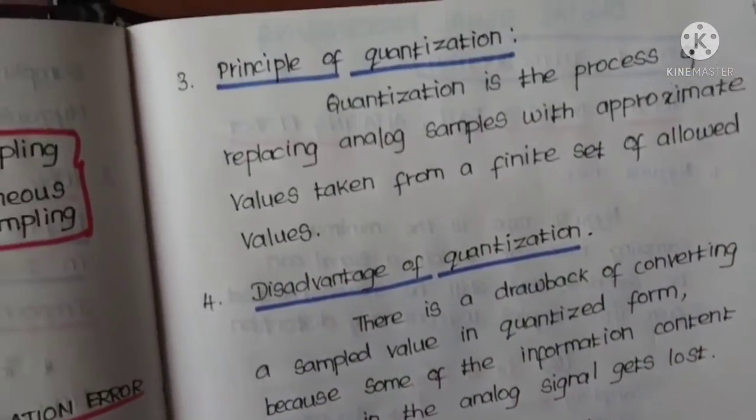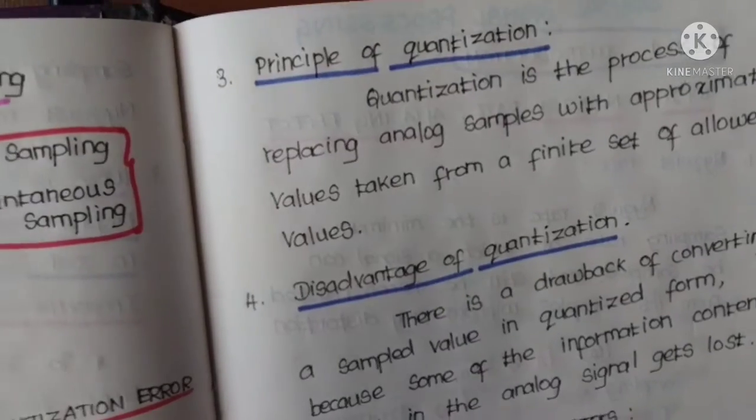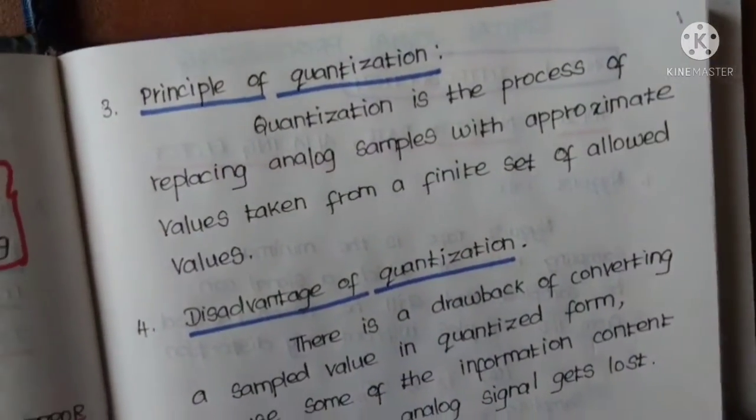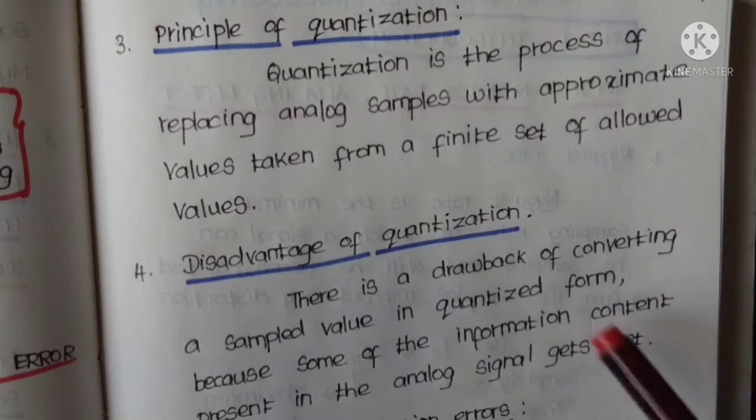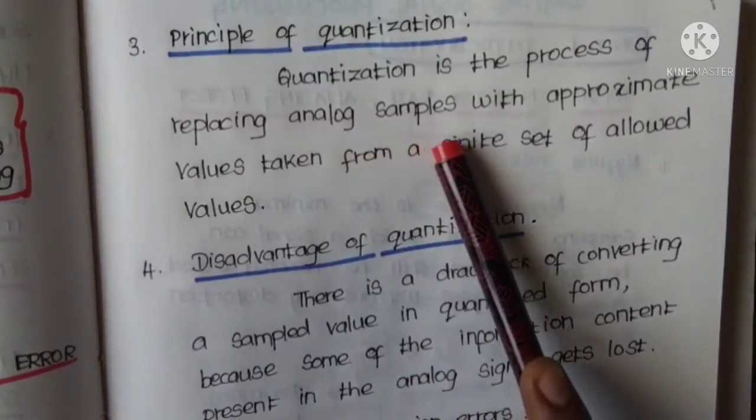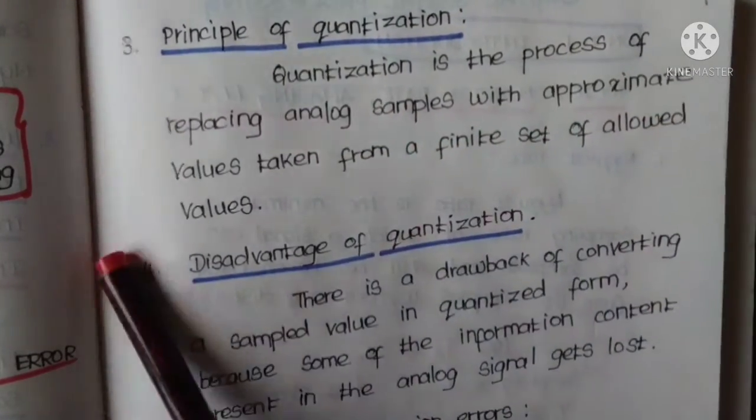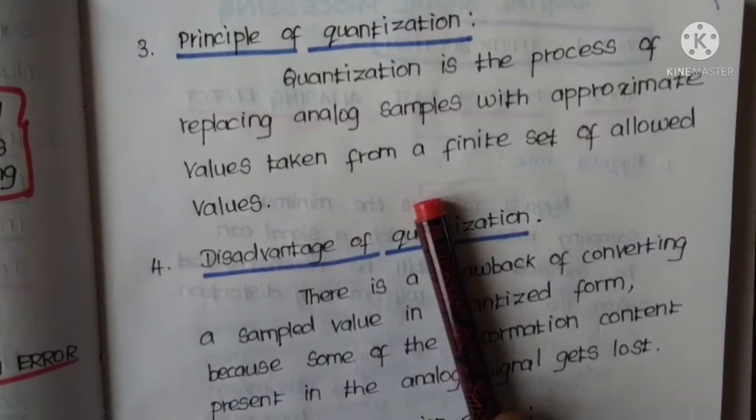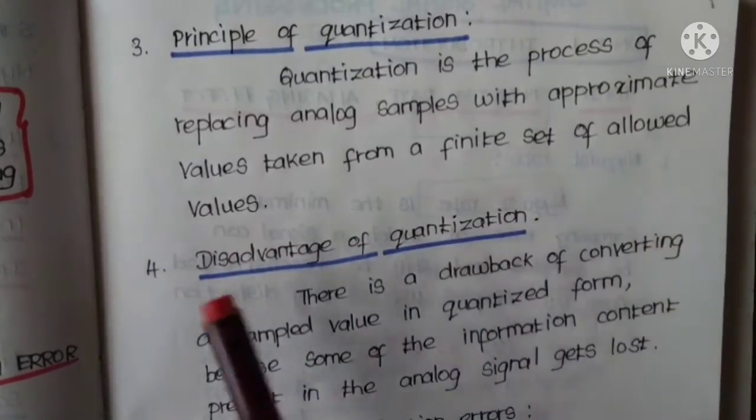The principle of quantization is that quantization is the process of replacing analog samples with approximate values taken from a finite set of allowed values.